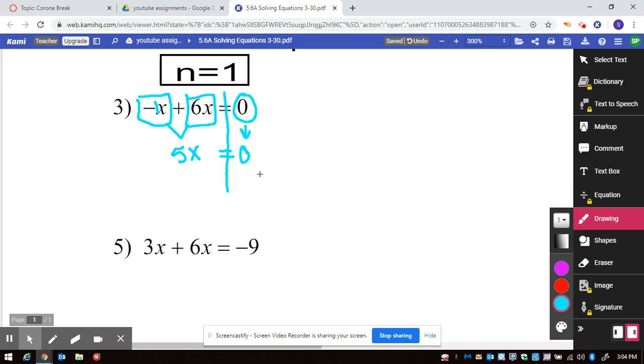Then the next step, we remember from our work last week, is to divide by the number in front of the x, because 5 divided by 5 is 1x, which equals 0 divided by 5, which happens to be 0. Sometimes folks, the answer will be 0.